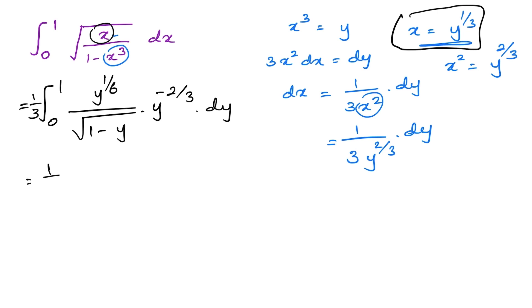Then if we simplify a little bit, 1 over 3 integral from 0 to 1. Now we can simplify this. We have y to the minus 1 half, and this part we can write in the numerator. 1 minus y raised to the minus 1 half times dy.